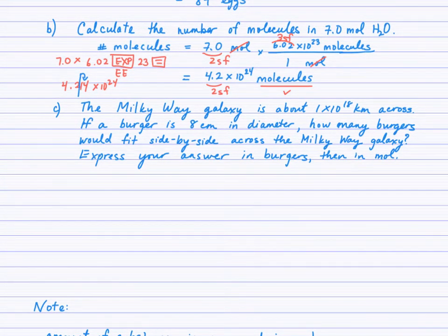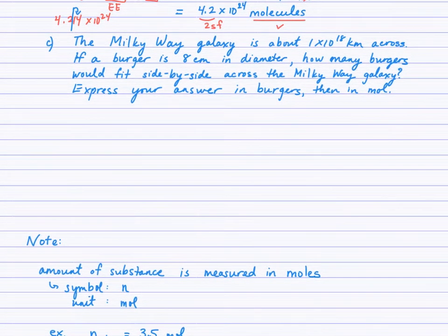So, in this last example C I'm asking you to solve a problem so work at your problem solving skills incorporate factor label and your concept understanding of the concept of a mole. So, I'm telling you here that the Milky Way galaxy is about 1 times 10 to the 18 kilometers across. So, that's the galaxy where our solar system is found. So, if a burger, a hamburger is 8 centimeters in diameter how many burgers would fit side by side across the Milky Way galaxy? First, I want you to express your answer in burgers so how many burgers and then how many moles would that be? So, we have this broad galaxy 1 times 10 to the 18 kilometers across and I'm saying what if you put burgers side by side from one end of the Milky Way galaxy to the other? How many burgers would that be? And then express that number of burgers in moles. So, give it a shot.